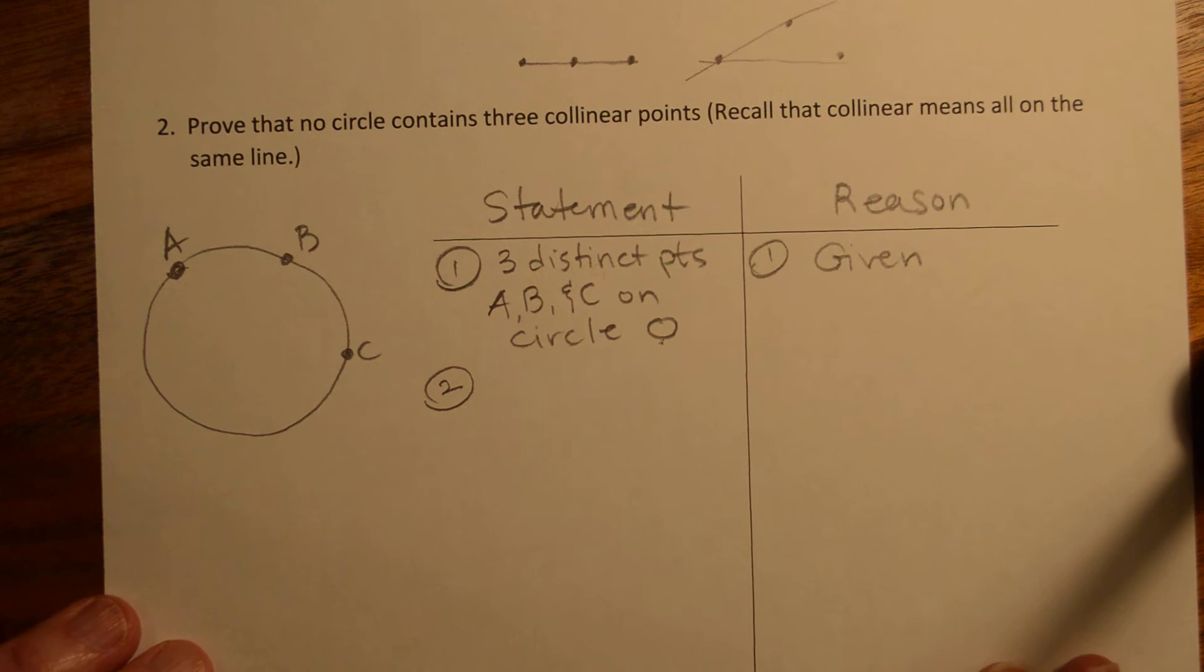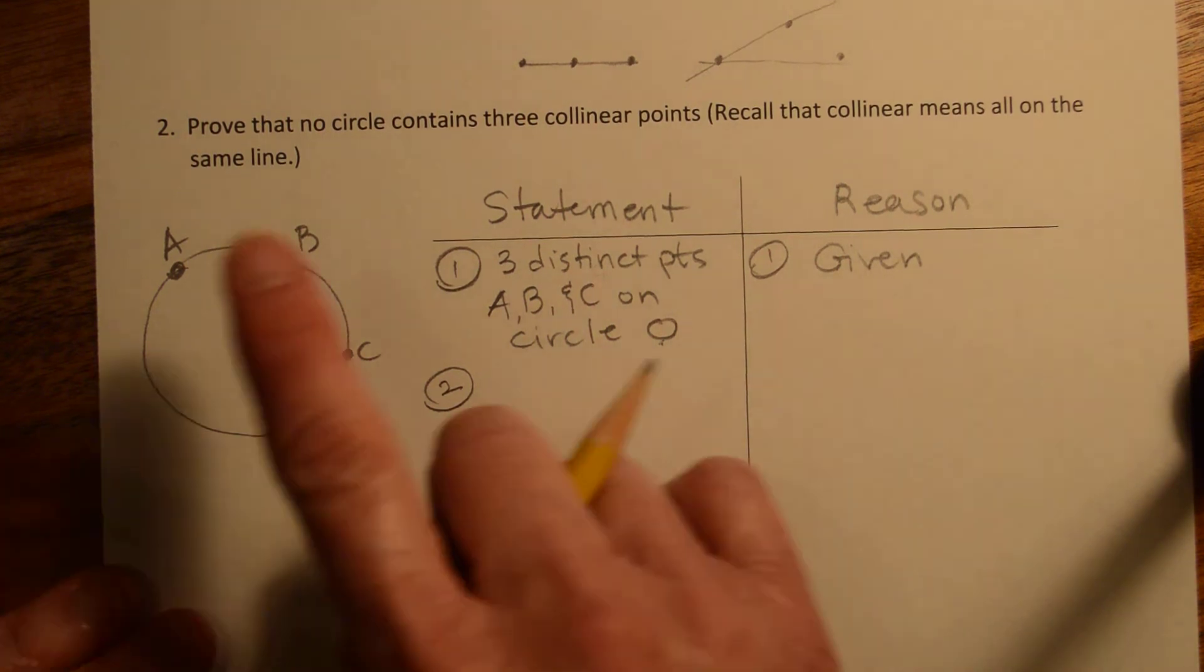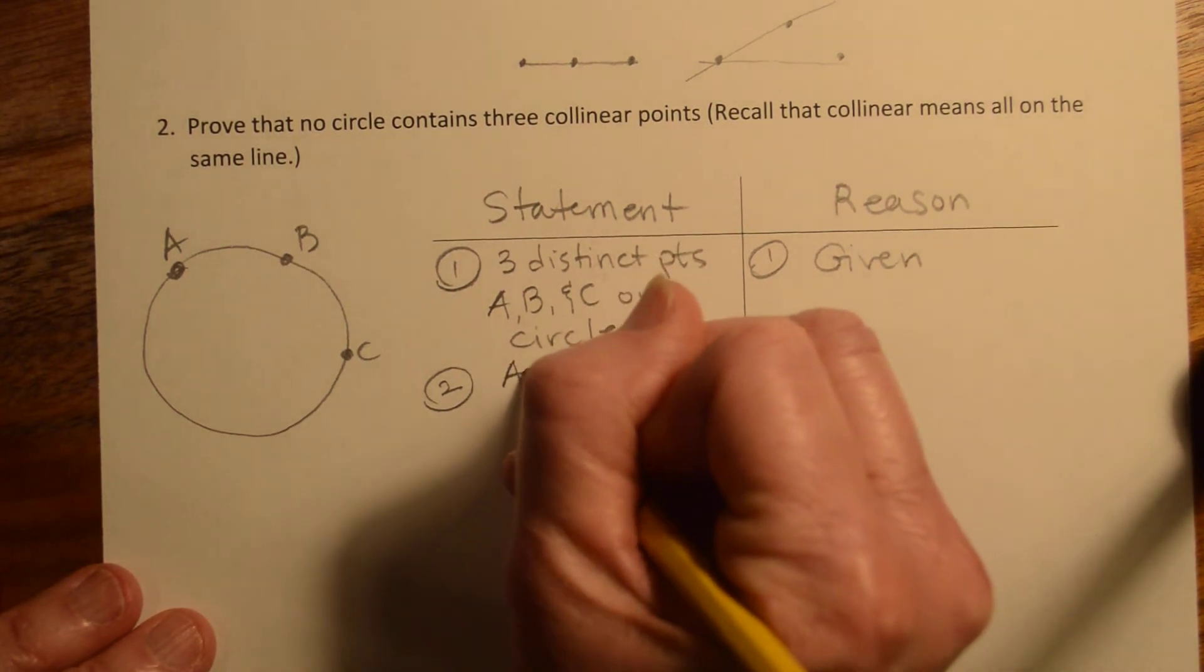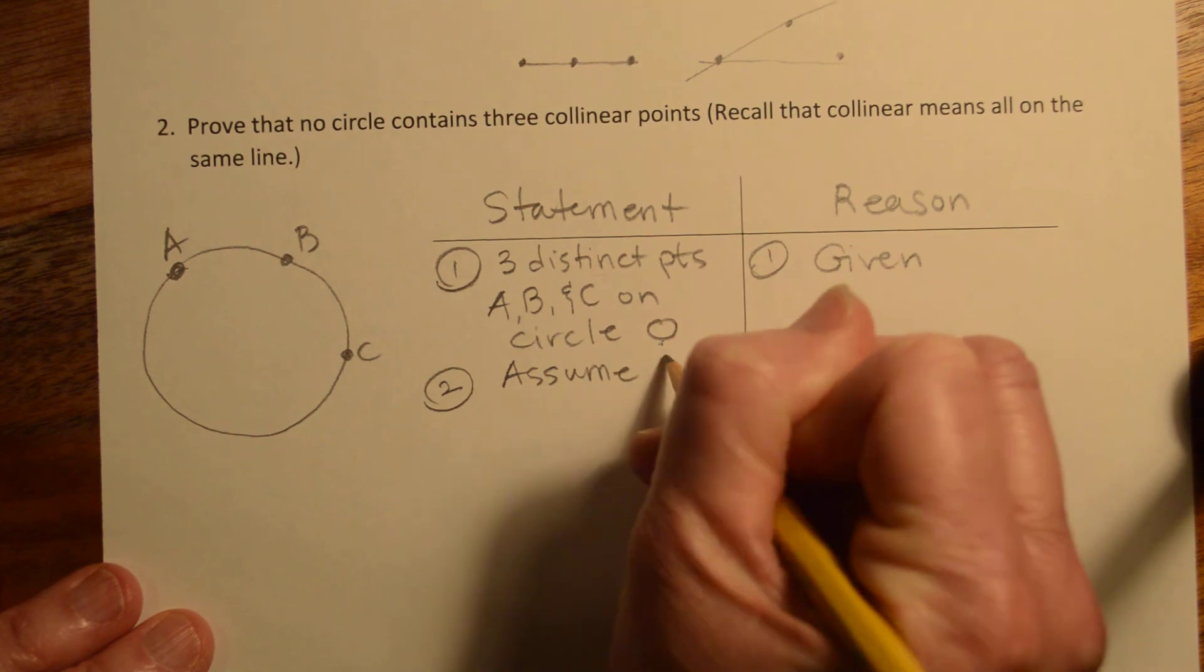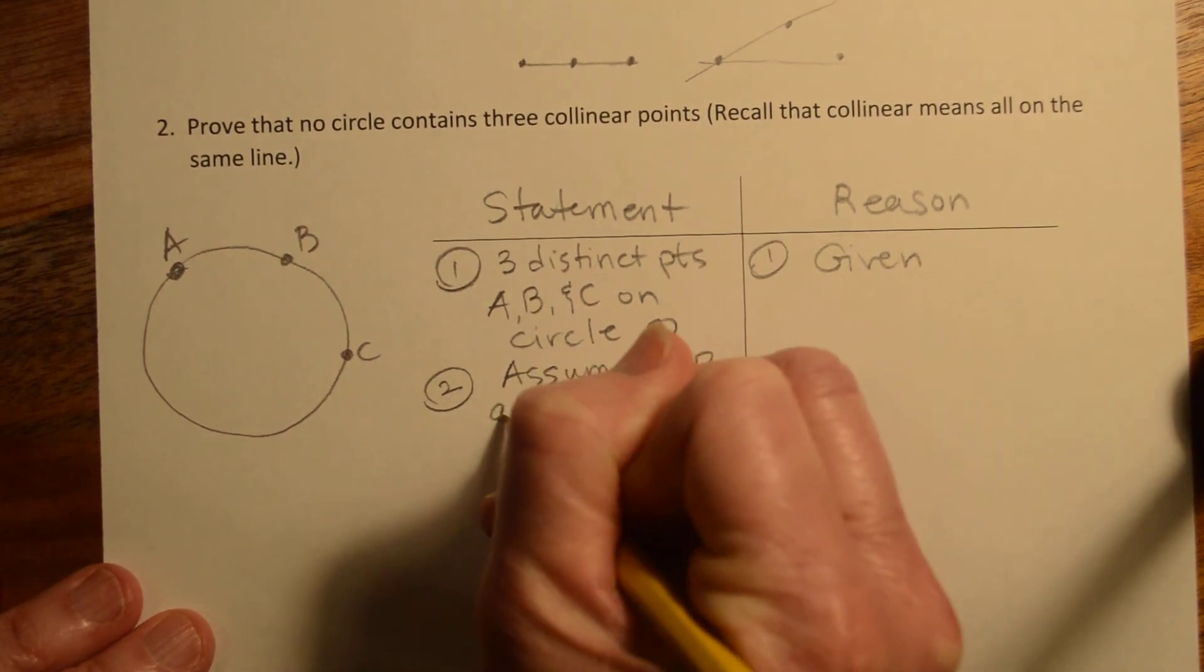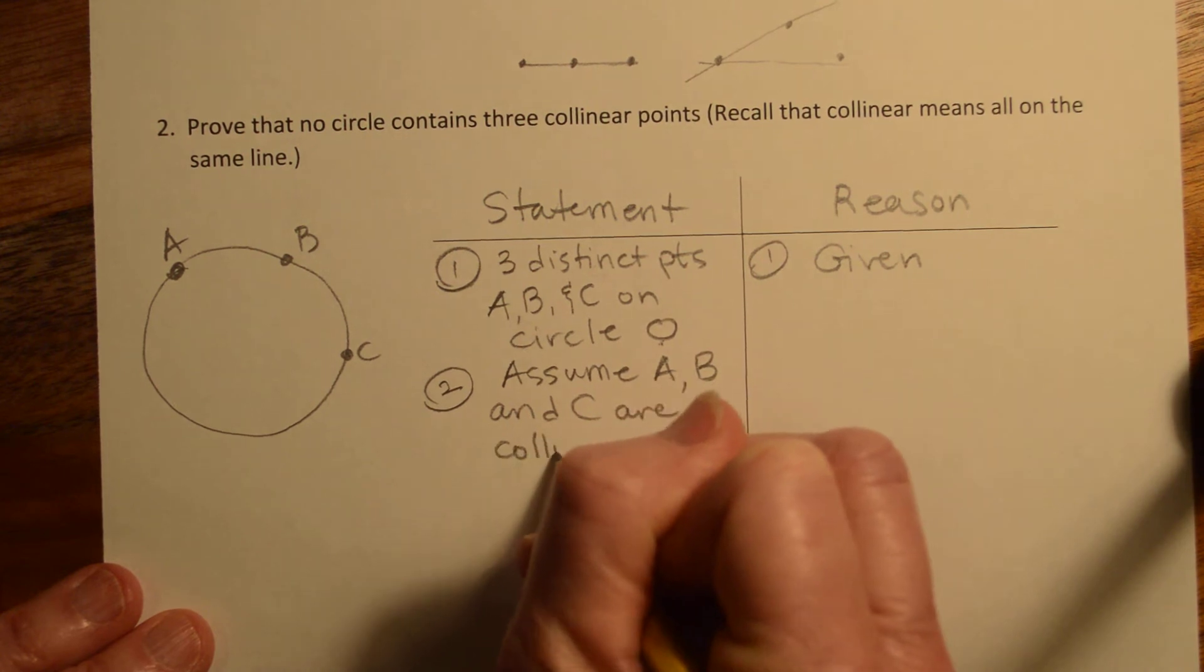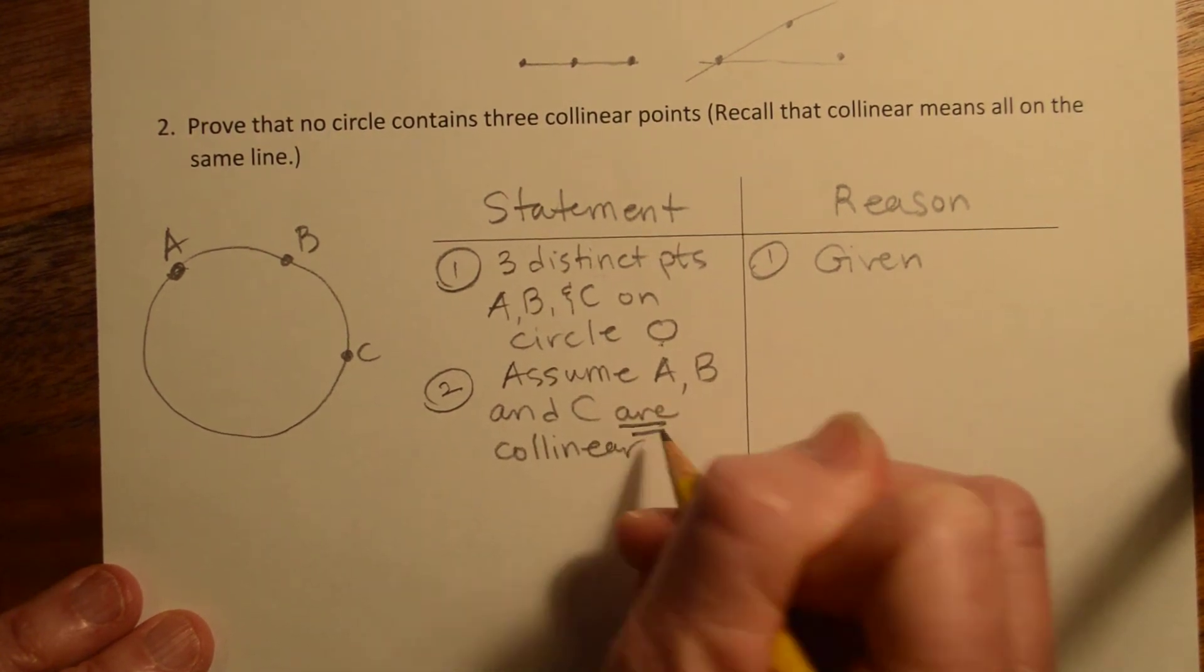So the best way to do this proof, and again we have not done many of these, and some of the others also are of this format, is proof by contradiction or an indirect proof. So how can we prove that they're not collinear? Let's assume that they are and we'll end up with something that's just garbage. So assume A, B, and C are collinear.